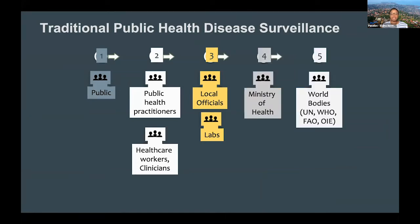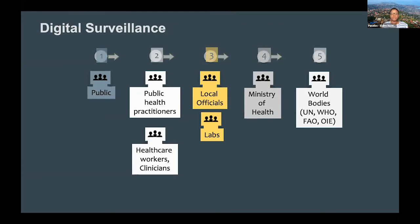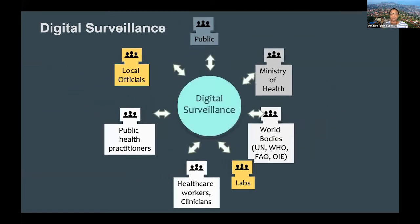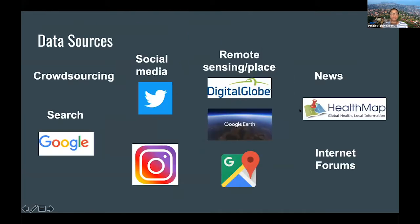In traditional public health surveillance, someone gets infected, goes to the hospital, talks to healthcare workers, gets tested, and that information is reported to local officials, then to the Ministry of Health, and then to the WHO. Before, this could take weeks. With advances in technology, this information gets shared much faster. The focus has now shifted to looking at how this data can be used in surveillance across different populations — not to replace traditional surveillance systems, but to supplement them.